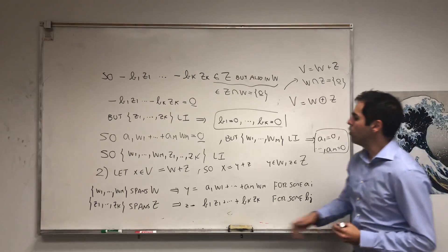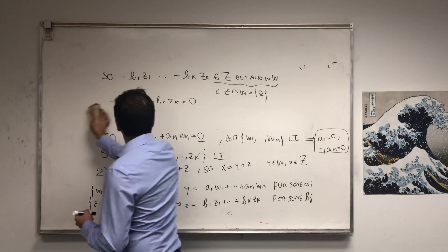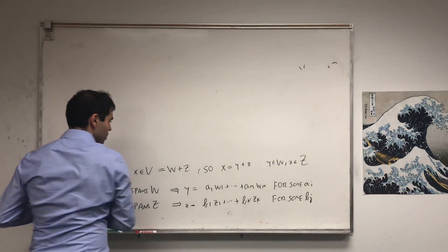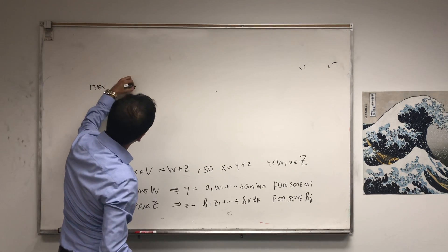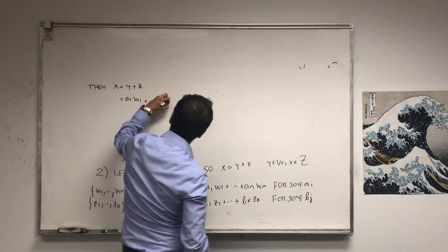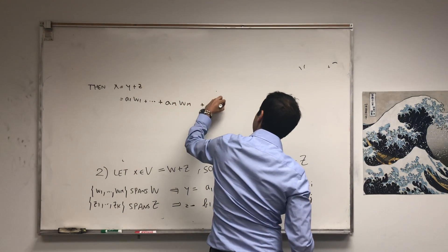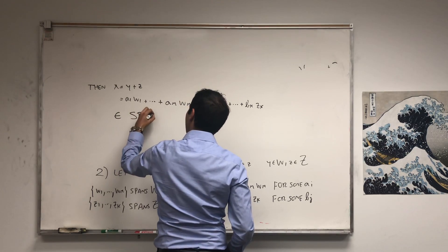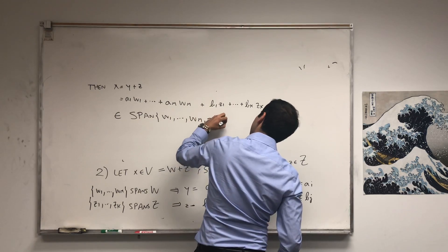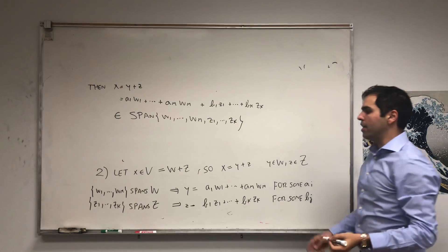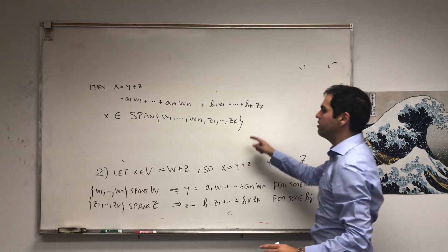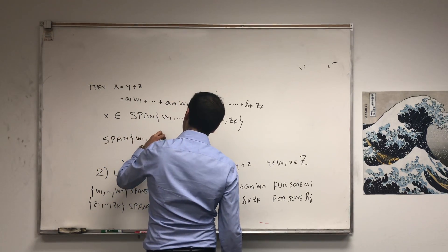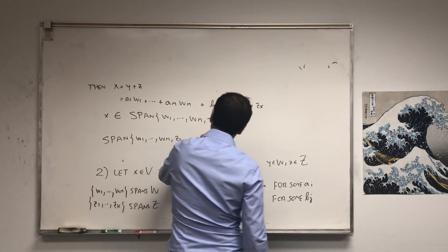Therefore x = y + z = A1·W1 + ... + Am·Wm + B1·Z1 + ... + Bk·Zk, which is precisely in the span of our union {W1, ..., Wm, Z1, ..., Zk}. Since any arbitrary vector in V is in this span, the span of the union set is all of V.